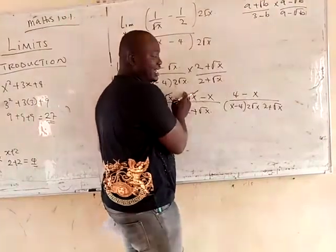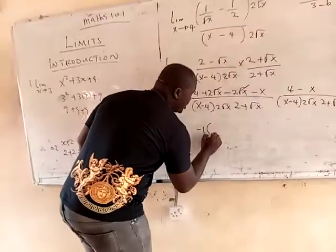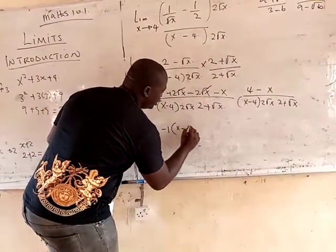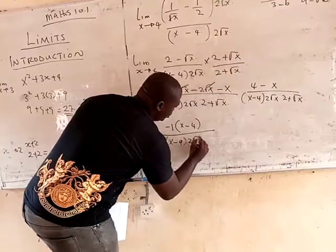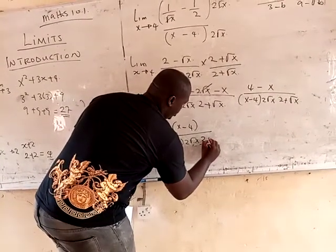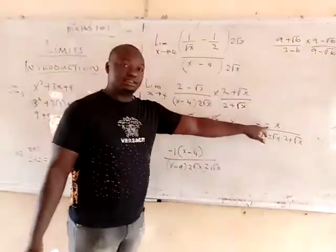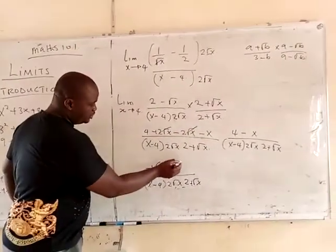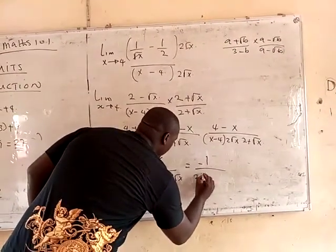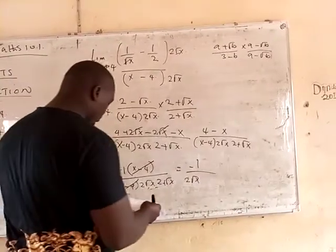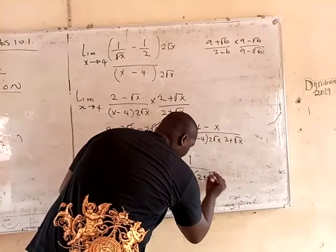So I can factor minus 1 outside to make this look like that. If I factor minus 1 outside, this will now come into minus 1 times x minus 4. All into x minus 4, and 2 root of x, and 2 plus root of x. So from here, if you expand this, you're still going to get the same value. This will cancel this. So you'll be left with minus 1, all over 2 root of x, into 2 plus root of x.